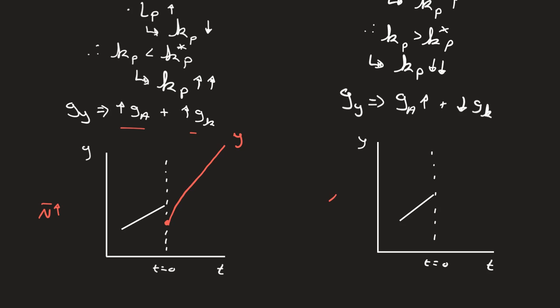For the increase in alpha, we're taking people away from production, so overall production goes down. Technology is pushing growth up, but capital is pushing it down, so it takes longer to reach that higher growth path. This is a really interesting policy result from the Romer model: you can argue both for and against these policies by considering short run versus long run. Increasing population hurts in the short run but improves outcomes long-run. Sending more people to university also hurts short-run but pays off long-run.